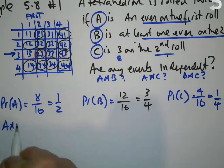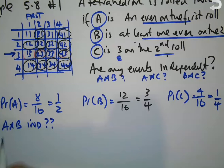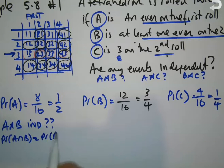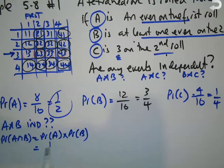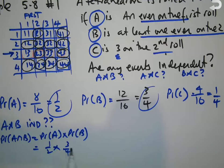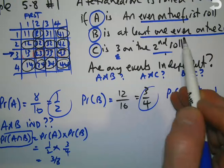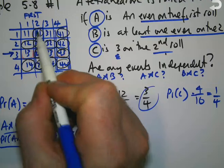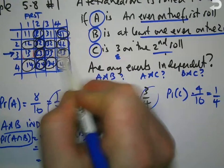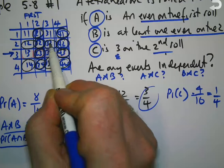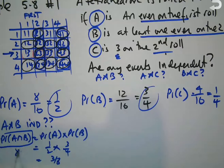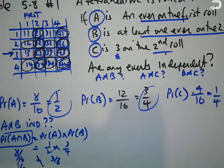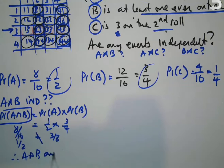Are A and B independent? They will be independent if the probability of A intersect B equals the probability of A times the probability of B. The probability of A is one half, the probability of B is three quarters, so that product gives three eighths. The probability of A intersect B — even on the first roll AND at least one even on the two rolls — must be even on the first, which gives those eight outcomes. Eight out of 16 is one half. One half does not equal three eighths. Therefore, A and B are not independent.